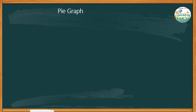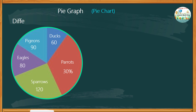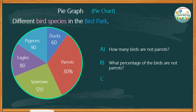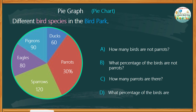Here is a pie graph about the different bird species in the bird park. Study the chart and answer the guide questions. Letter A: How many birds are not parrots? Letter B: What percentage of the birds are not parrots? Letter C: How many parrots are there? And Letter D: What percentage of the birds are ducks?